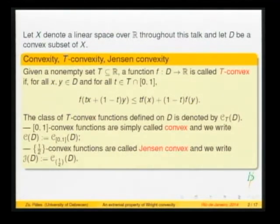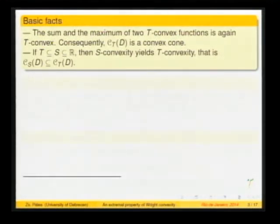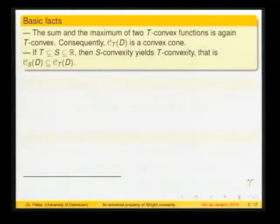Let me recall some basic facts, because in the last 30–40 years some nice and substantial results have been established in the context of these classes. First, due to the linearity of the defining inequality, the sum of two T-convex functions is again T-convex, and multiplying a T-convex function by a non-negative number keeps it T-convex. Therefore T-convex functions form a convex cone. Also, the pointwise maximum of two T-convex functions is again T-convex.